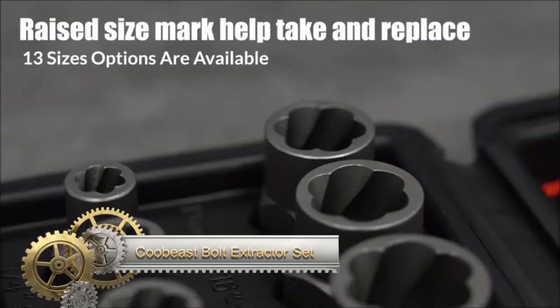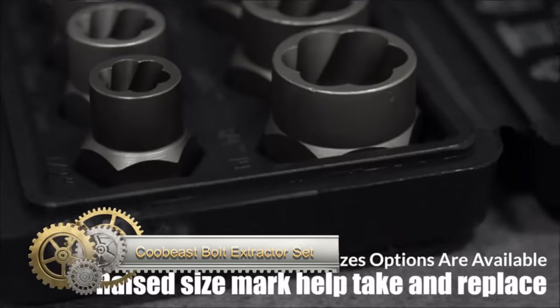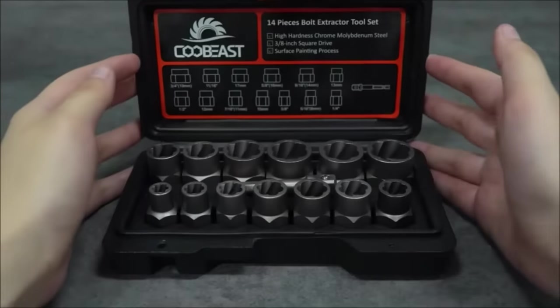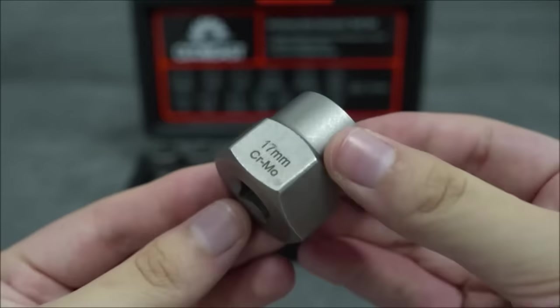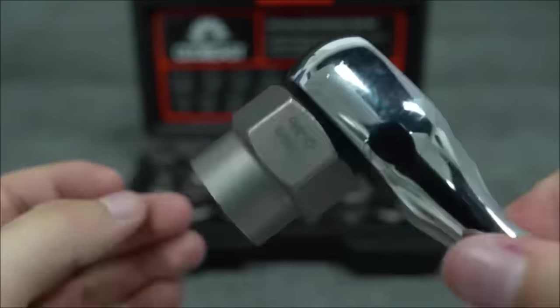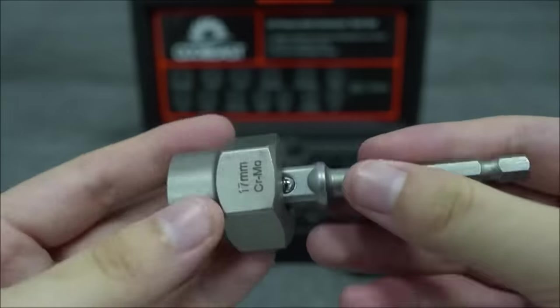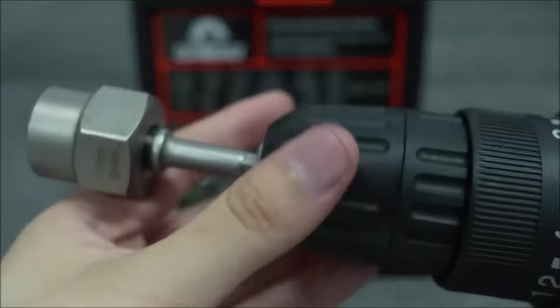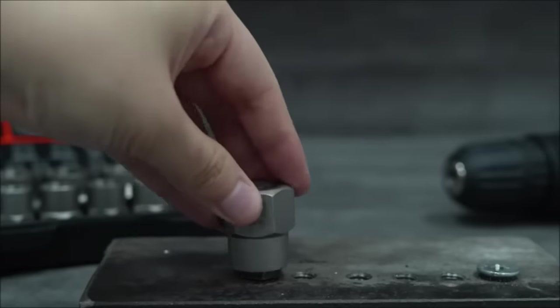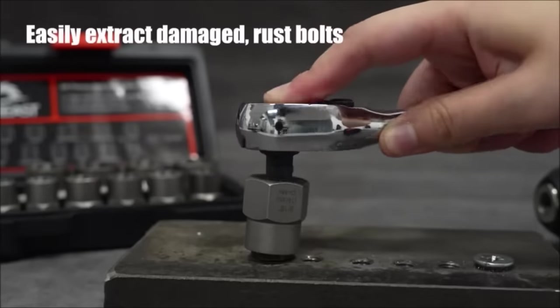The Kubist Bolt Extractor Set Heavy Duty is a 13-piece collection of robust tools engineered to efficiently eliminate damaged, rusted, or rounded bolts and nuts. This versatile set includes various extractor sizes and types, as well as a 3/8-inch adapter and a stripped lug nut remover. Crafted from high-quality chrome vanadium steel and heat-treated for enhanced durability, the extractors feature a spiral design that securely grips the problematic bolt or nut, making removal effortless.